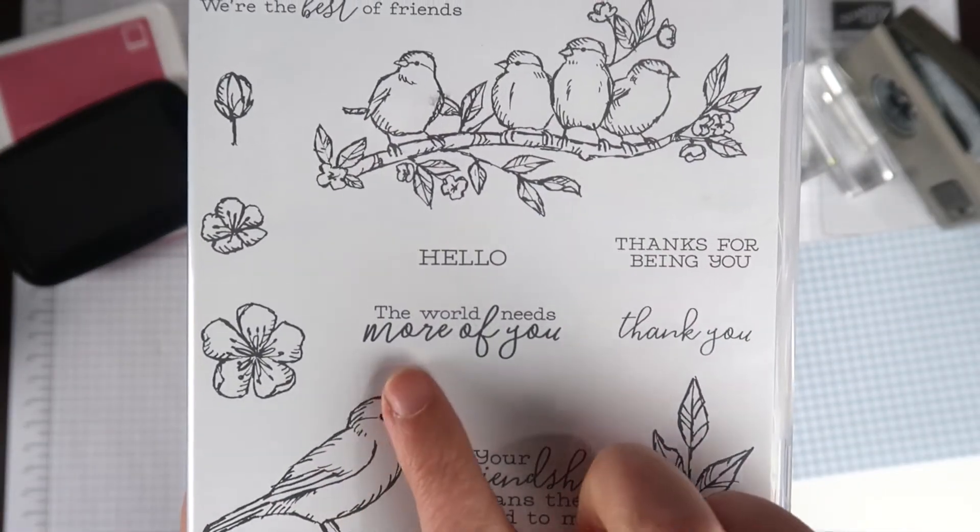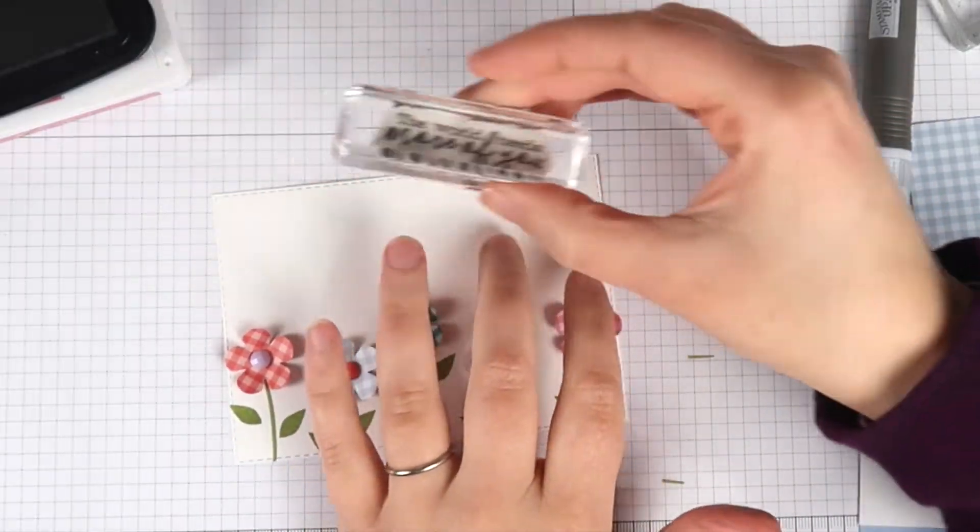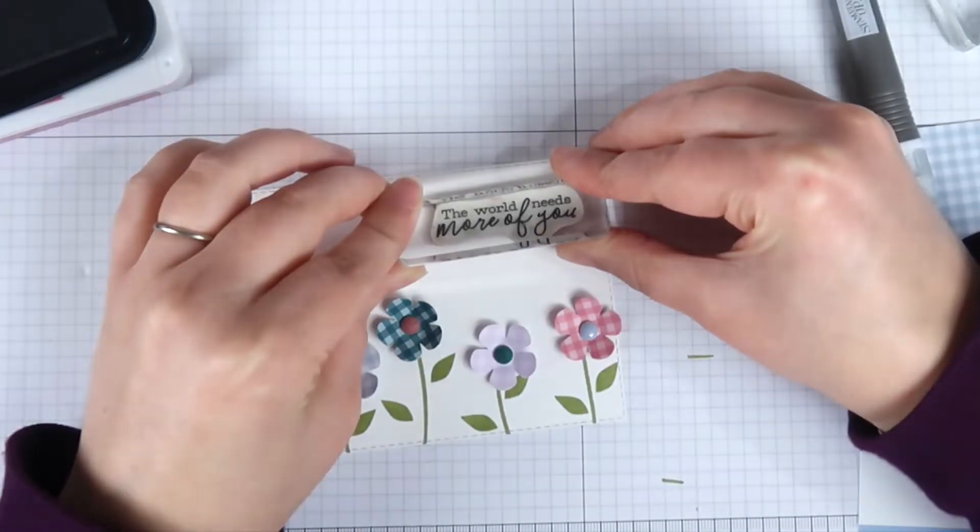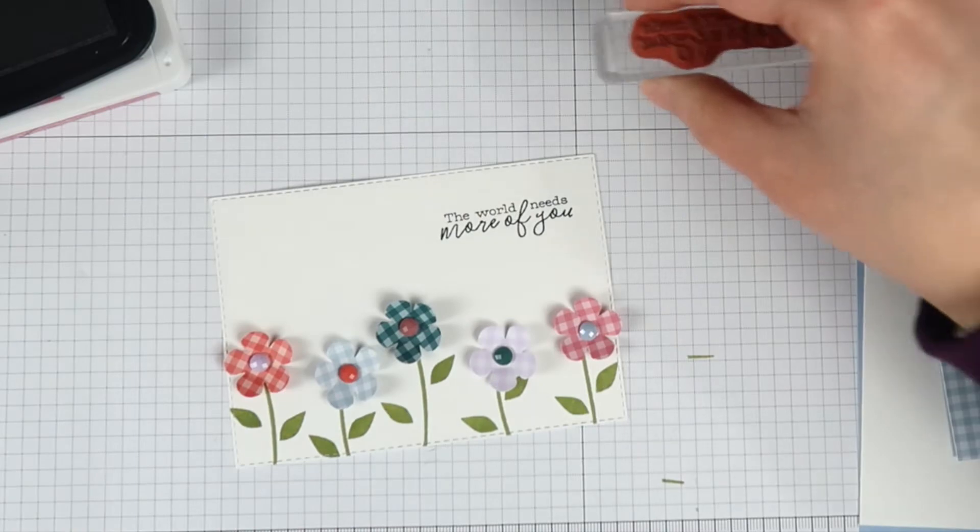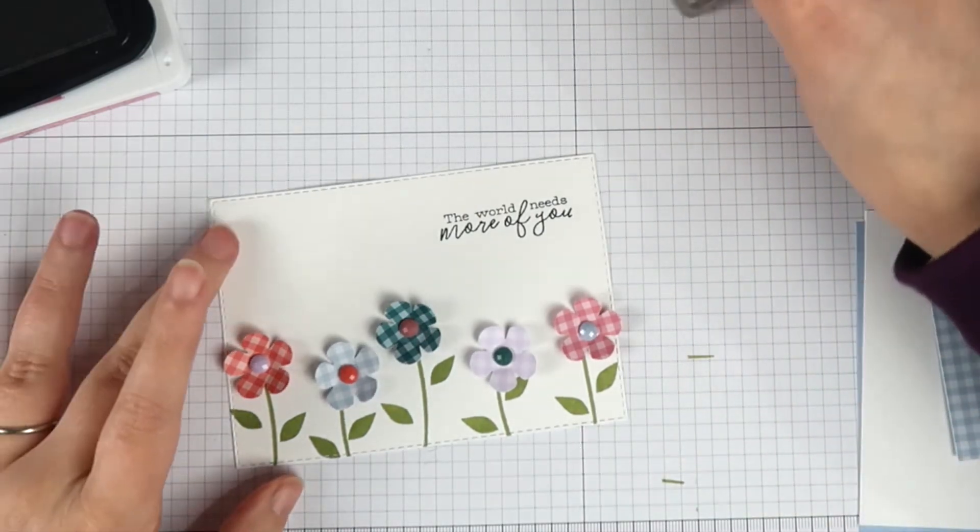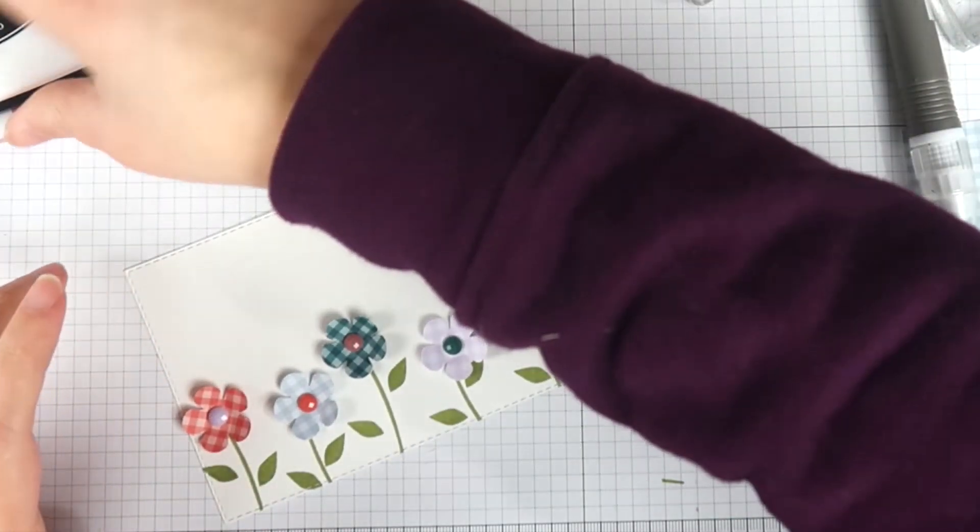Before I glue my flowers down and kind of commit to this panel, I do want to go ahead and stamp my sentiment. I'm using a sentiment from my Free as a Bird stamp set. It says 'The world needs more of you.' I'm just using my Tuxedo Black Memento ink and I'm stamping that off up in the corner.